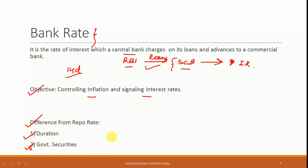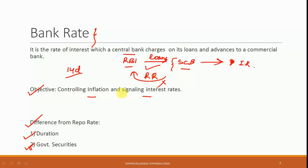If you remember, in the case of repo rate, the RBI was taking some government securities back. But this is something that is not happening in the case of bank rate. In the bank rate, the loan is given at a particular interest rate, and as a result of that, as a collateral, RBI is not demanding any government security. So that is one major difference between repo rate and bank rate.